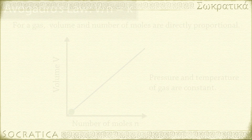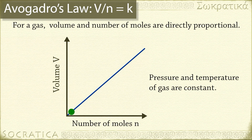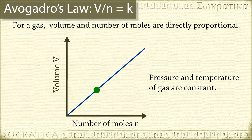Avogadro's law relates the volume with the quantity of gas: V over N is a constant. These are also directly related. The more gas particles you have, the more room they will take up. Notice that pressure and temperature are not part of Avogadro's law — Avogadro's law works if pressure and temperature are held constant.